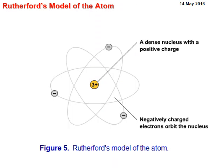Just reinforcing Rutherford's model of the atom: you have a dense nucleus with a positive charge, and the negatively charged electrons orbit this positive nucleus. The positive charged nucleus is very small — about the size of a fly in a cathedral.